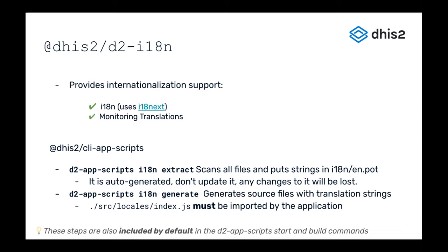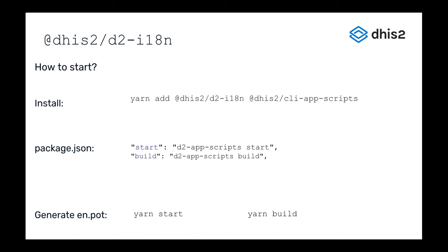The extract and generate steps happen under the hood for yarn start and yarn build. It's straightforward to implement: you add @dhis2/d2-i18n alongside your CLI App Scripts, and your start and build scripts remain d2-app-scripts start and d2-app-scripts build. Out of the box, your application will automatically translate any strings it finds into other languages.